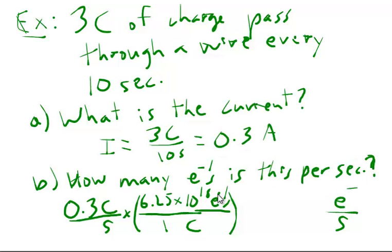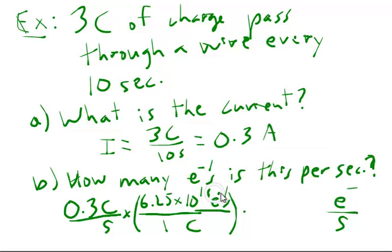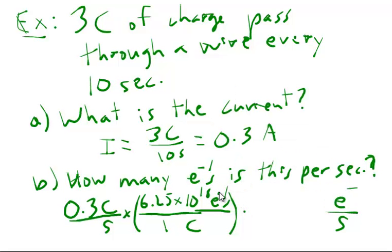If you want to get me a new, more powerful computer for Christmas, I would be most obliged. Okay. So, let's make sure that everything's working out right. These units cancel out. We have coulombs. And now we are left with electrons per second. Which is what we were trying to get. And we have to just do the math now. We're going to multiply.